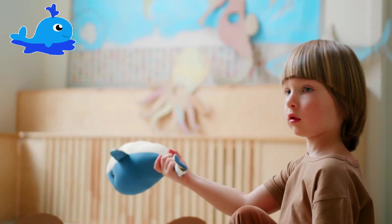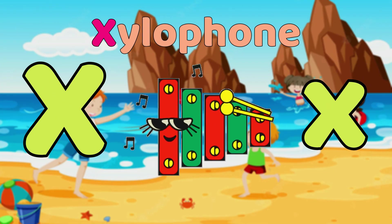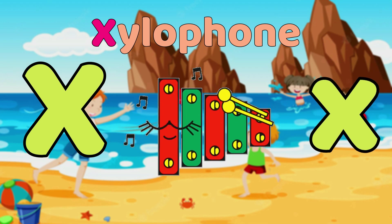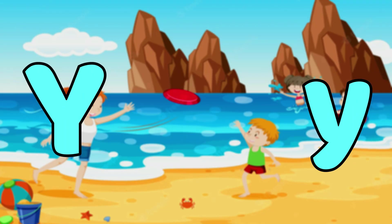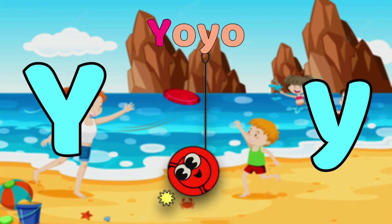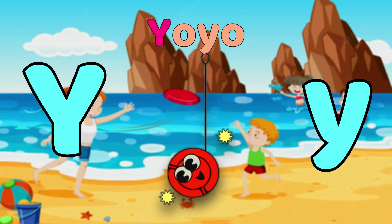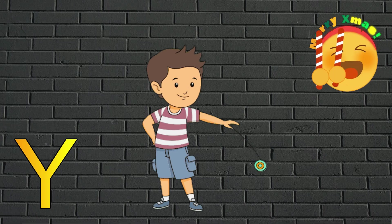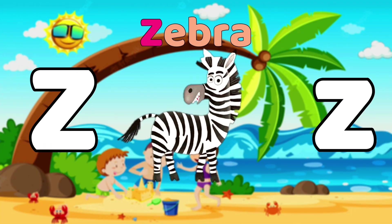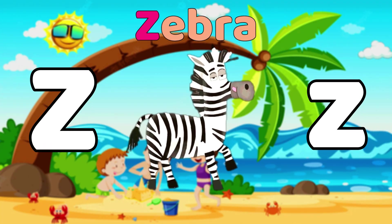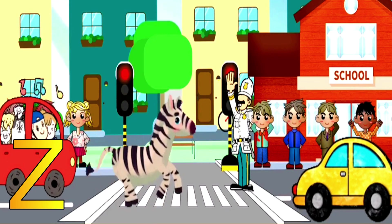X is for Xylophone. Z, Xylophone. Z, Xylophone. X, Xylophone. Y is for Yo-Yo. Y, Y, Yo-Yo. Y, Yo-Yo. Y, Yo-Yo. Z is for Zebra. Z, Zebra. Z, Zebra. Z, Zebra.